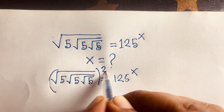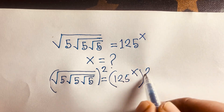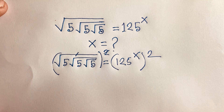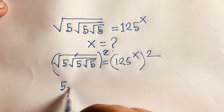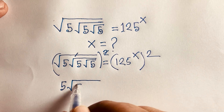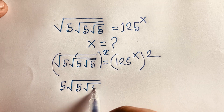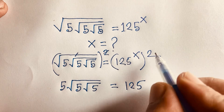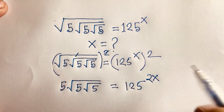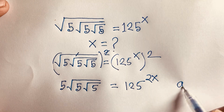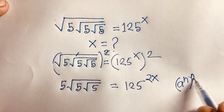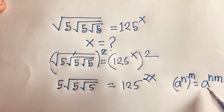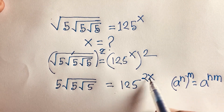How to solve this question: I use both sides whole square, then I can easily cancel the square root. We'll find out here is 5 times square root of 5, and square root of 5 is equal to 125 to the power 2x. We know that (a^n)^m = a^(n·m), so 2 times x it will be 2x.